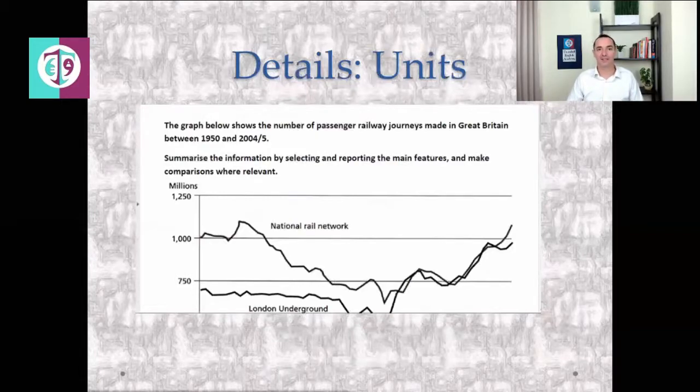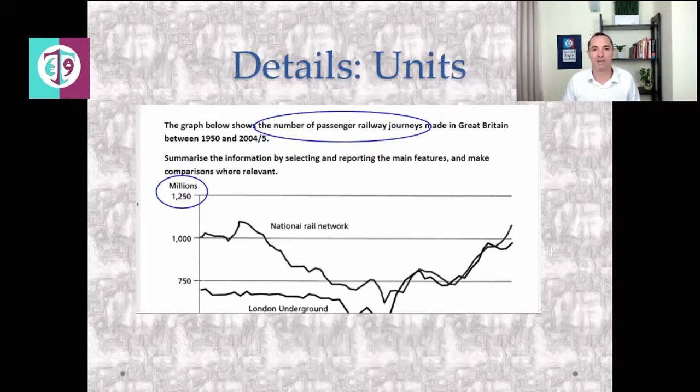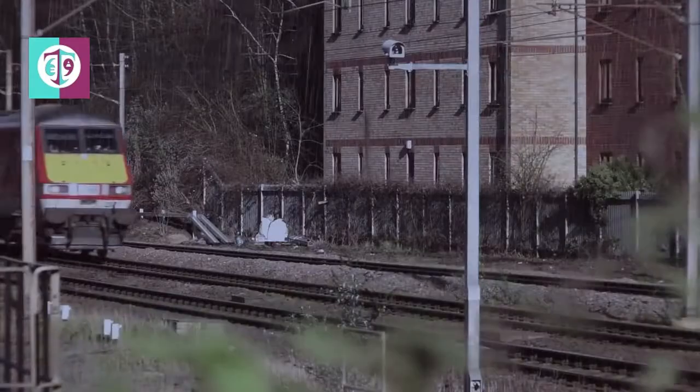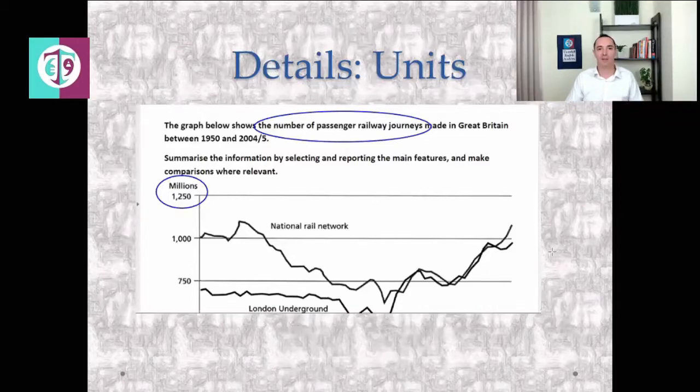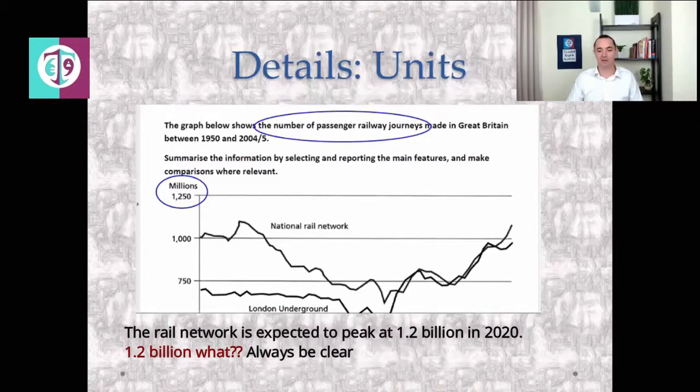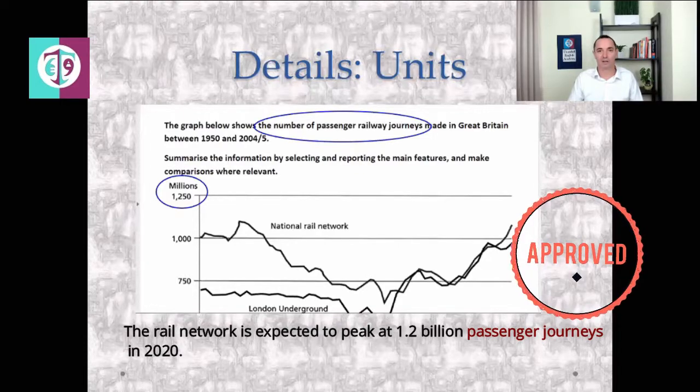First common mistake, units. Look carefully at all parts of the data and don't get the wrong units or forget to add the units. For example, we can see here that the task one is about number of passenger railway journeys. And we can see that the unit is millions. So here we've got 1250 million. This is really important not to forget that. For example, if you write that the national rail network is expected to reach a peak of approximately 1.2 billion in 2020. 1.2 billion what? We need to reference exactly what we're talking about here.